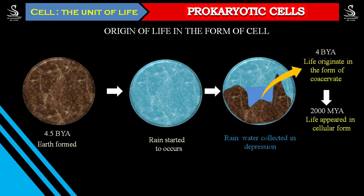Whatever these coacervates were, they kept on evolving. For the first time, a cellular form of life appeared about 2000 million years ago. That life which appeared in the form of a cell is what we are learning about today in this class — in the form of prokaryotes.